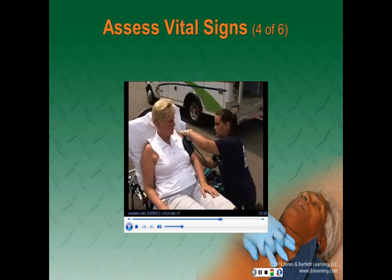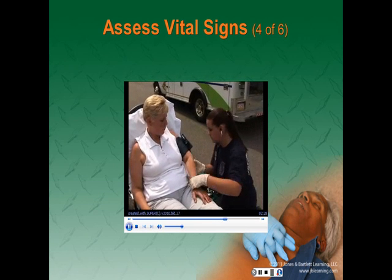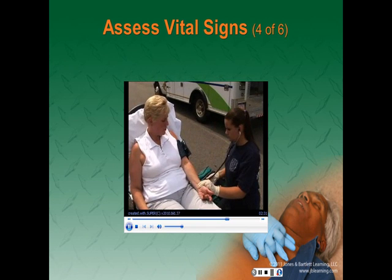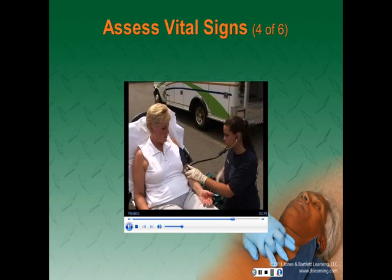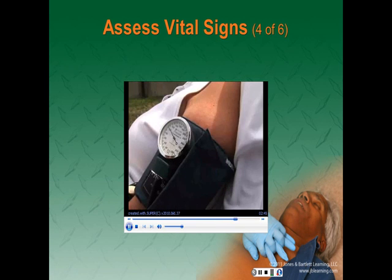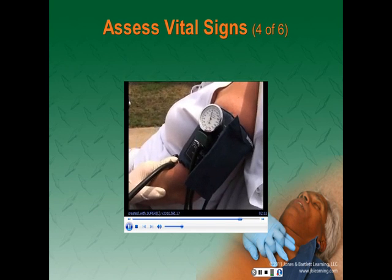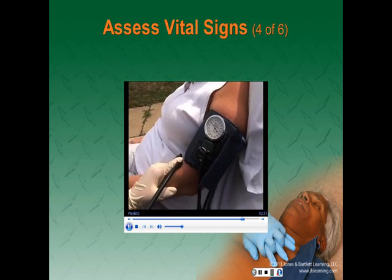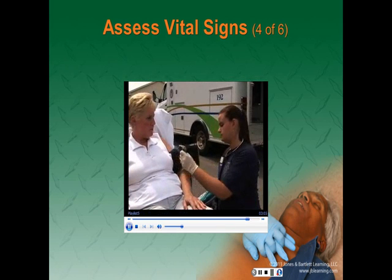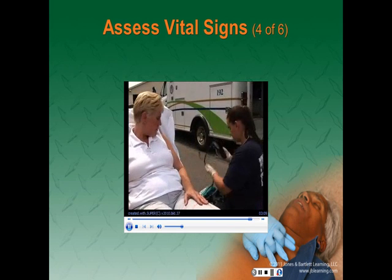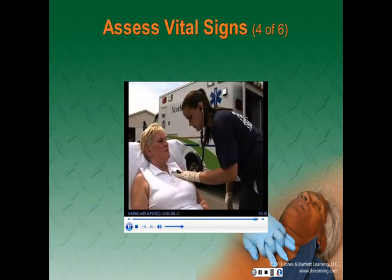To auscultate blood pressure, apply the cuff snugly to the upper arm and place the diaphragm of the stethoscope over the brachial artery. Inflate the cuff gently, listening for the Korotkoff sounds to appear as pressure increases. After the sounds disappear, give the bulb one or two more squeezes. Carefully and slowly release the air from the blood pressure cuff. The return of the Korotkoff sounds gives the systolic blood pressure, while the disappearance gives the diastolic. Deflate the cuff completely when finished and prior to re-inflation if additional attempts are performed.